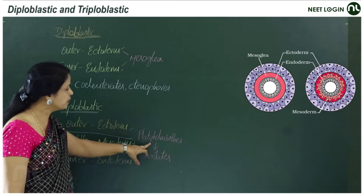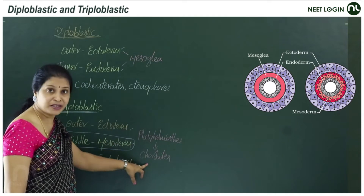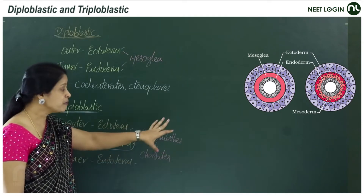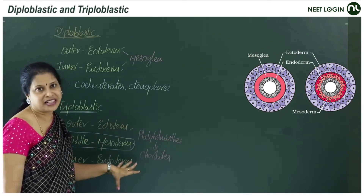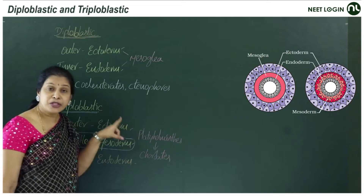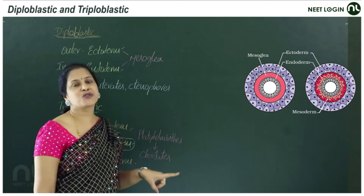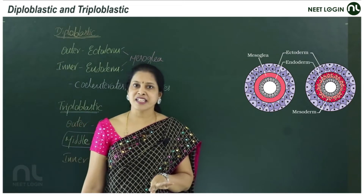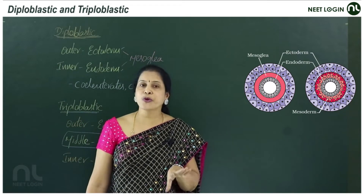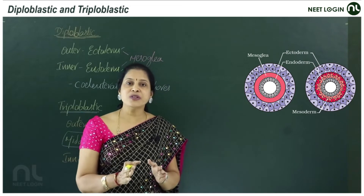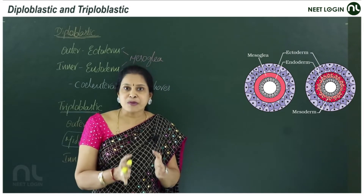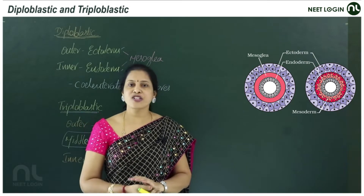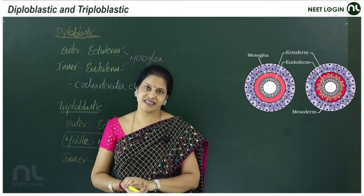From the phylum Platyhelminthes to Chordata, those animals are called triploblastic animals. Because of this mesoderm, the triploblastic animals are more complicated. So mesoderm is responsible for the complexity of organisms.